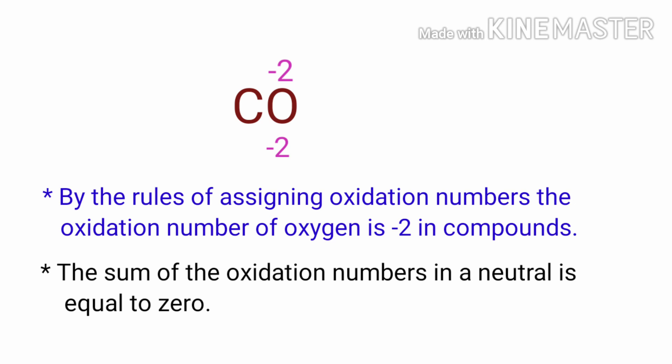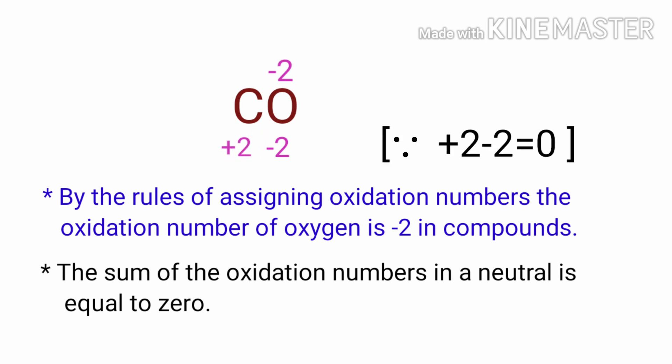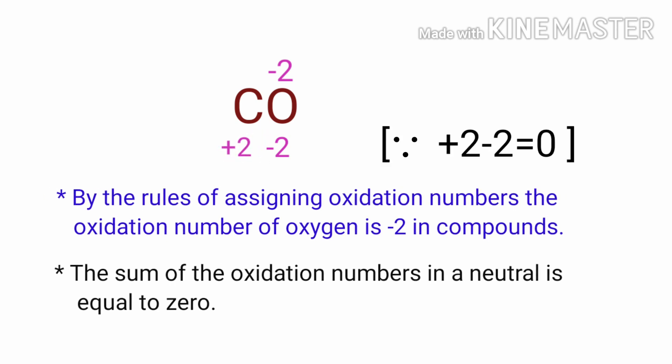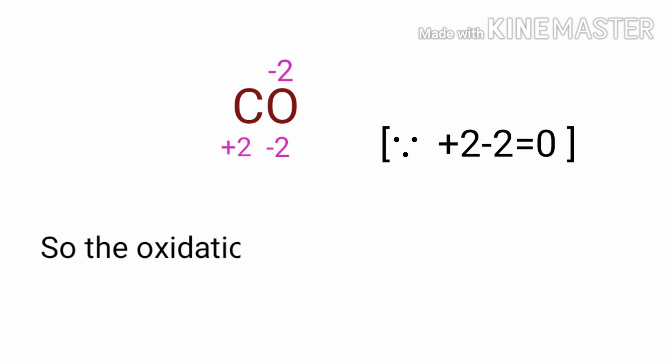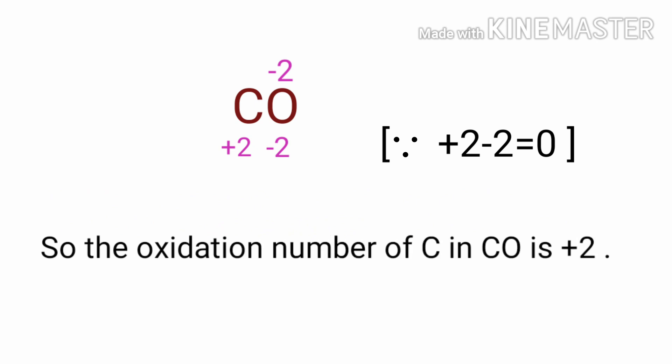So the number under C must be plus 2. Therefore, the oxidation number of the carbon in carbon monoxide is plus 2.